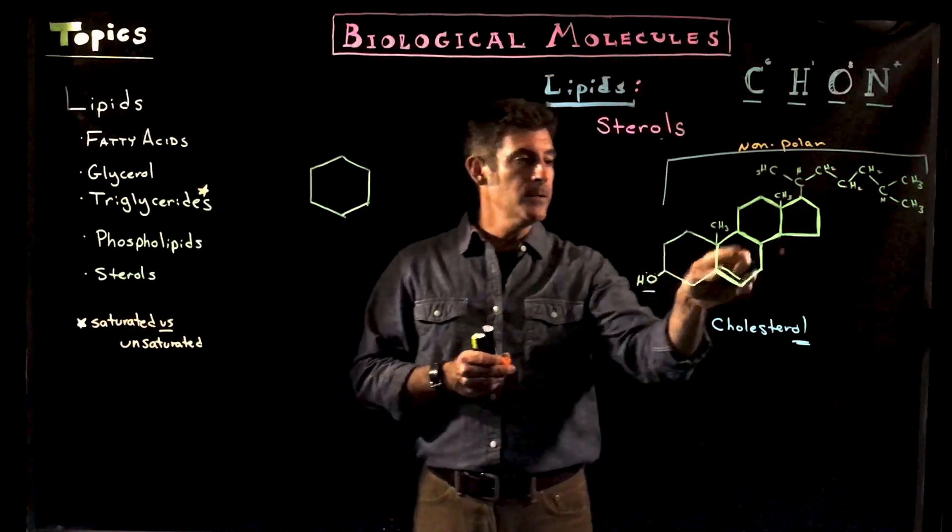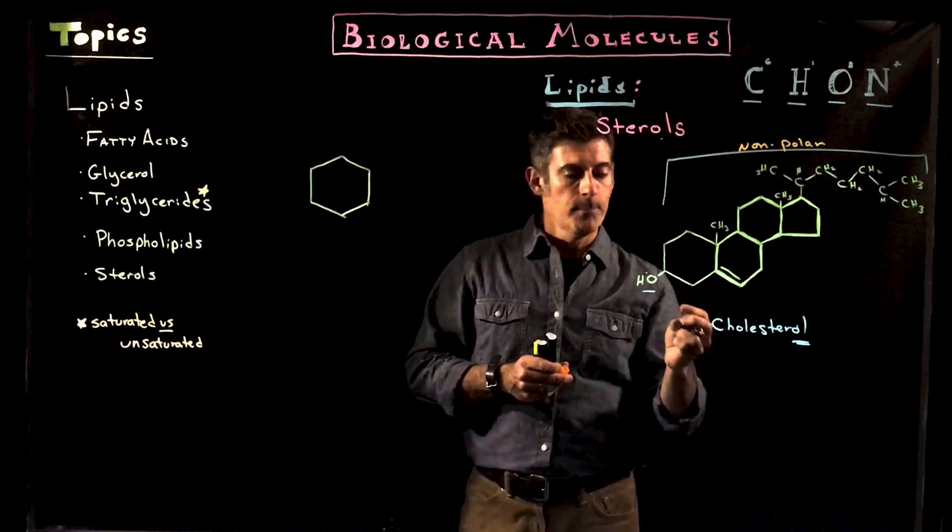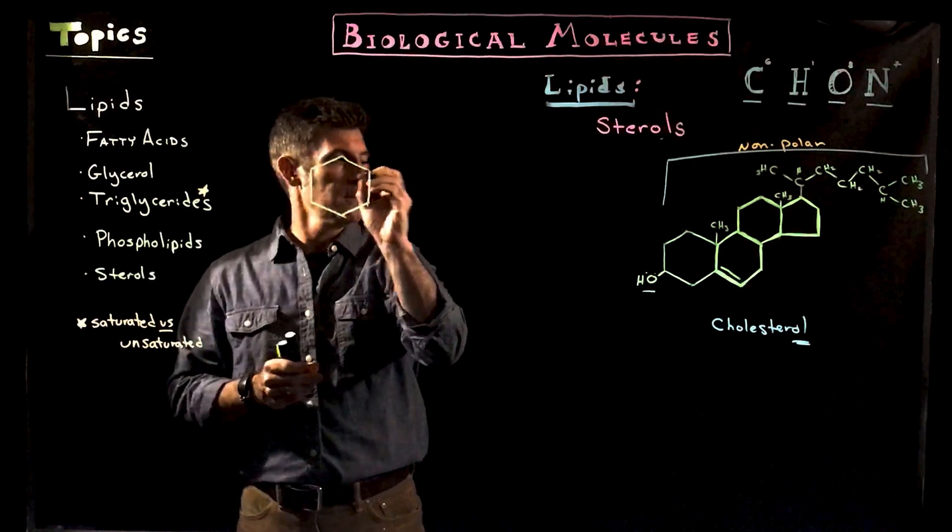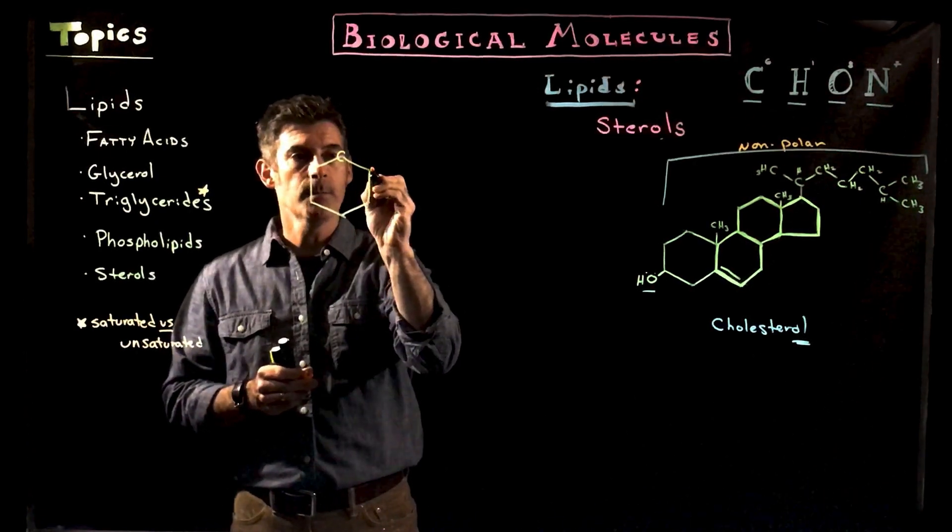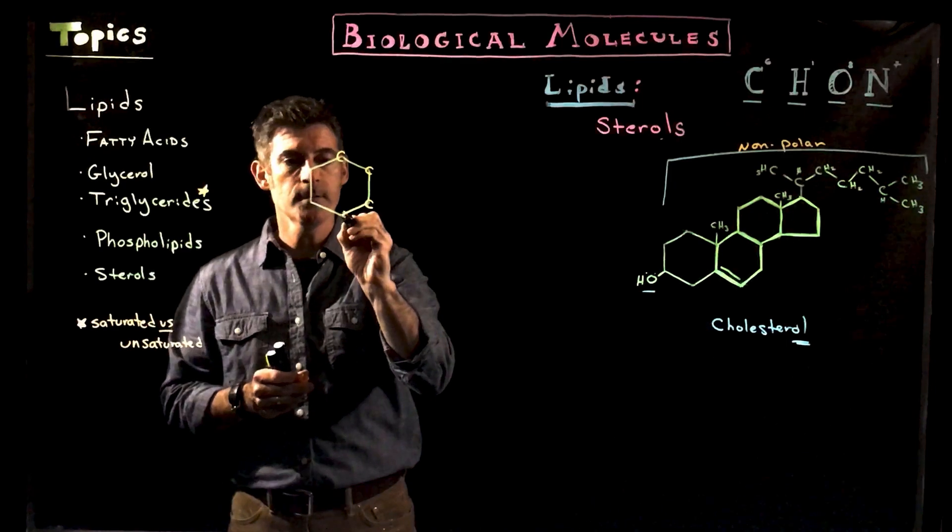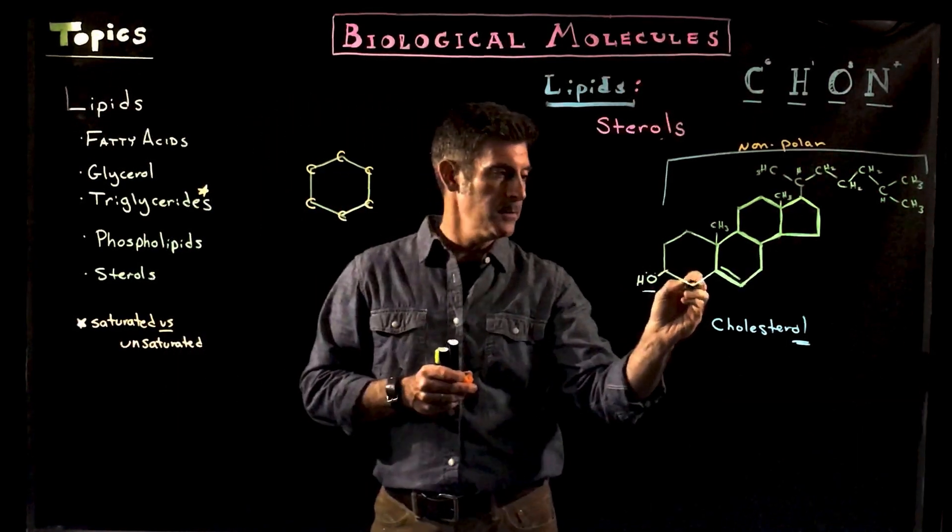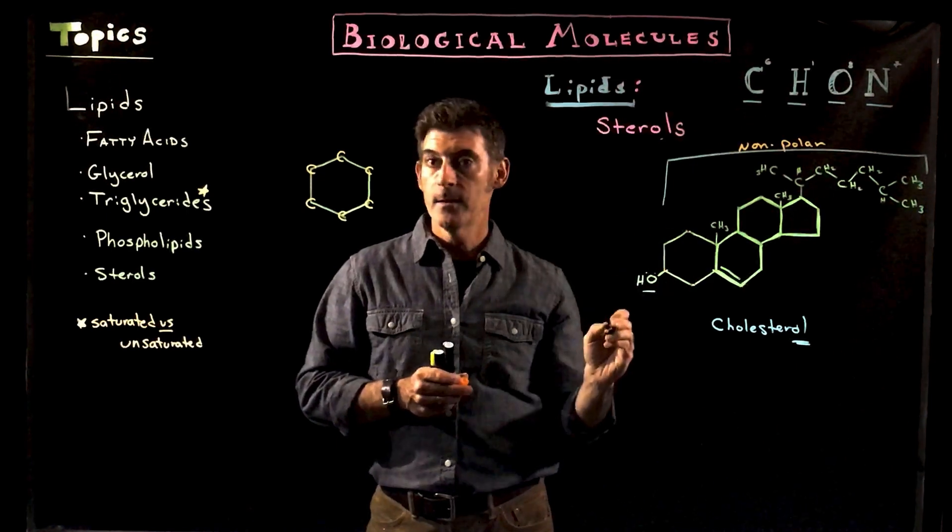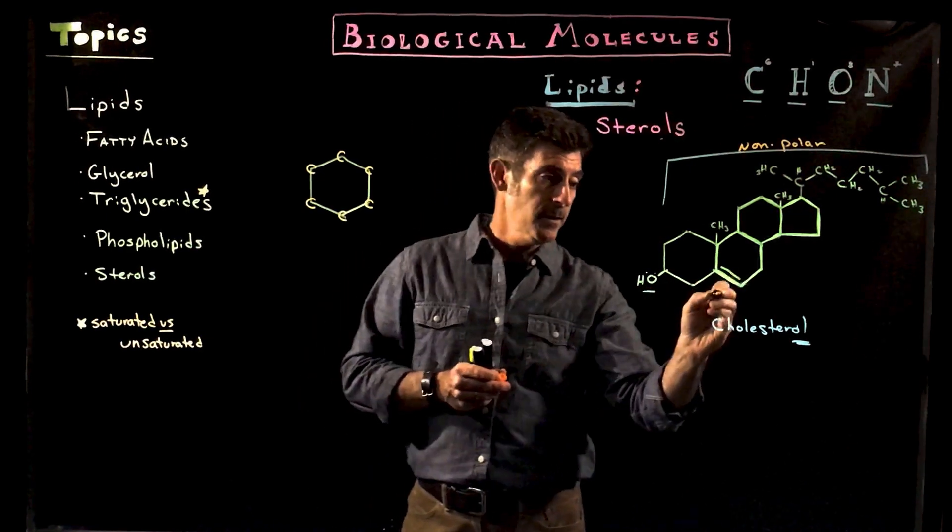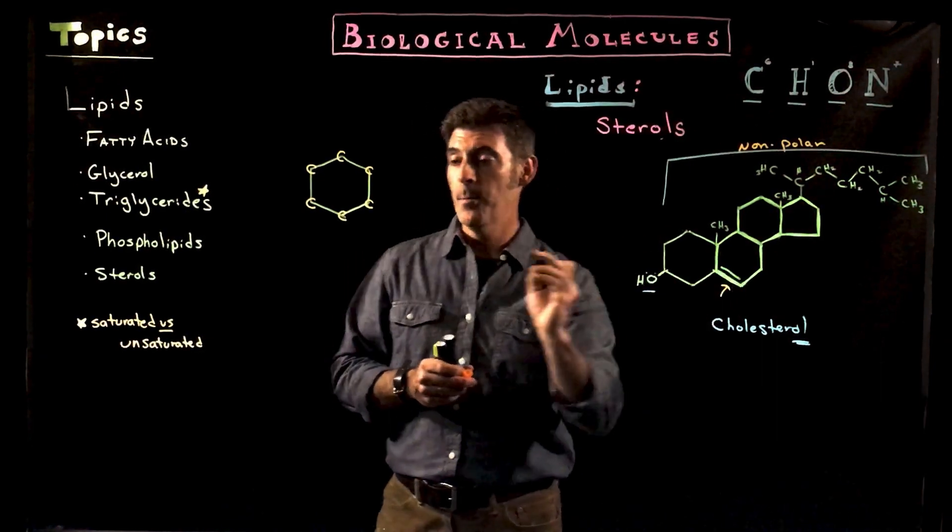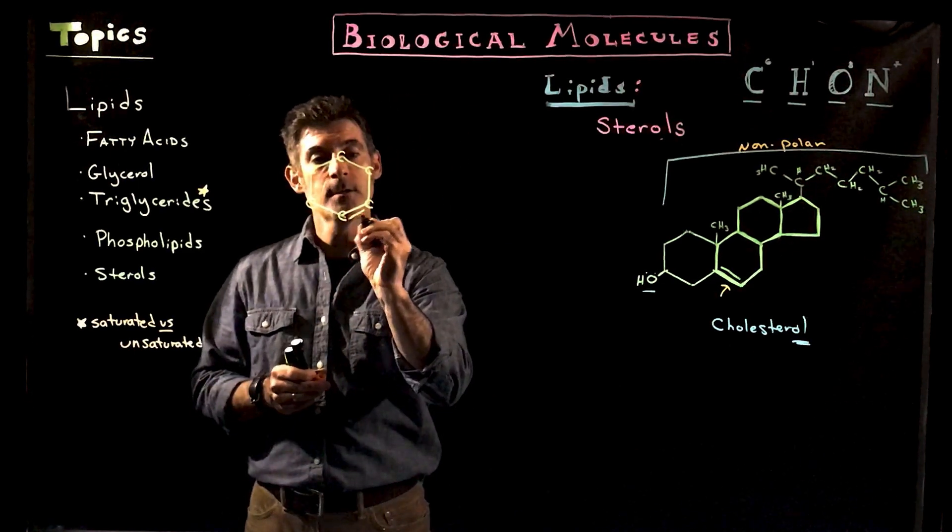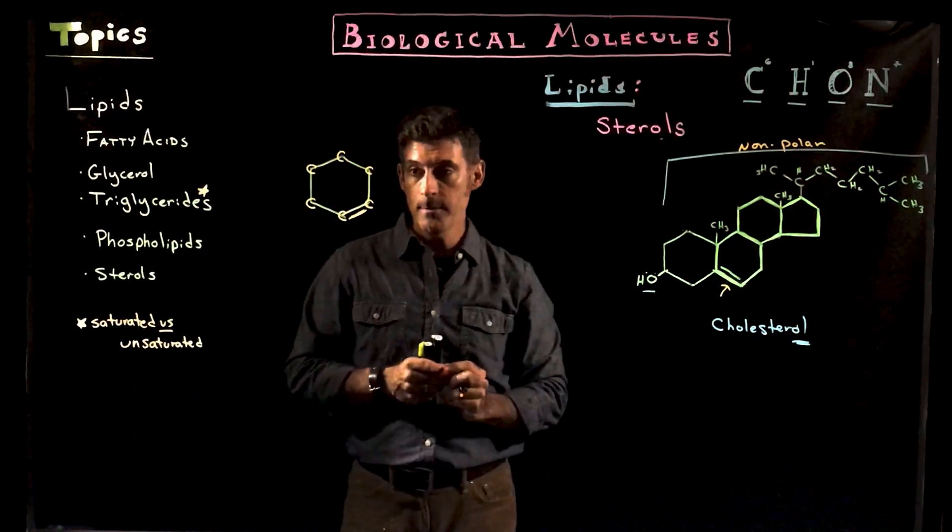When you see these ring structures, what you're really seeing are an abbreviated way of putting all these carbons in. So they're actually carbons at every corner, every point location. Here in the ring, there's a carbon. This area here shows that's a double bond. So that would actually be a double bond between those two carbons, right, in that ring.